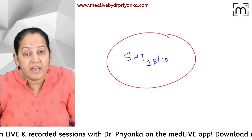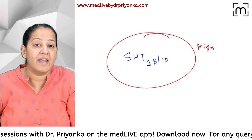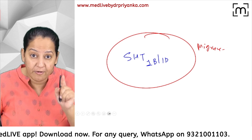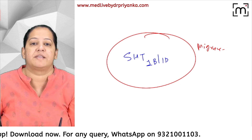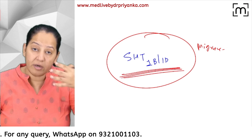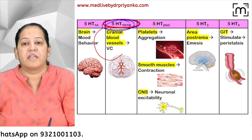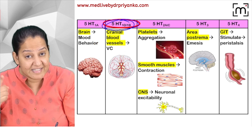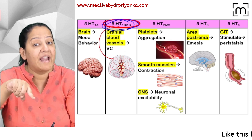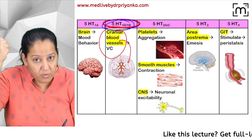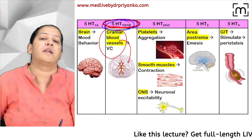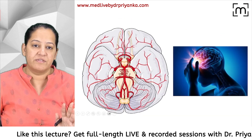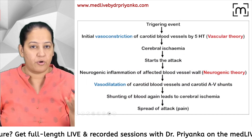This receptor is present on cranial blood vessels. When serotonin (5-HT) combines with this receptor, it leads to vasoconstriction of the cranial blood vessel, and that can lead to the start of the migraine.